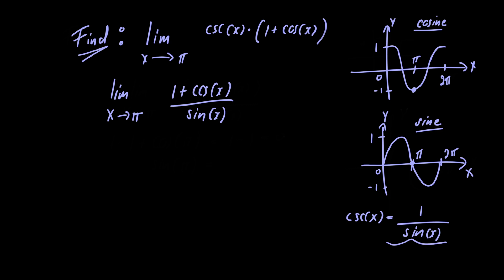Now if we were to just go ahead and let x equal π in the numerator, we would have 1 plus cosine of π. If we look at the graphic cosine here, we see that that's equal to minus 1, so we would just have 1 minus 1 which is equal to 0. And in the denominator we would have sine of π which is equal to 0.